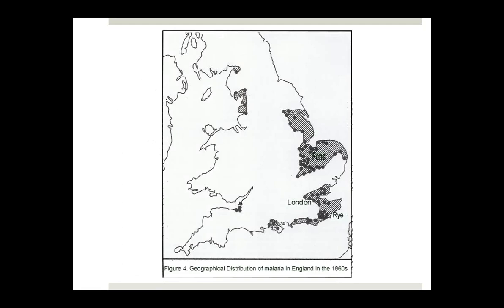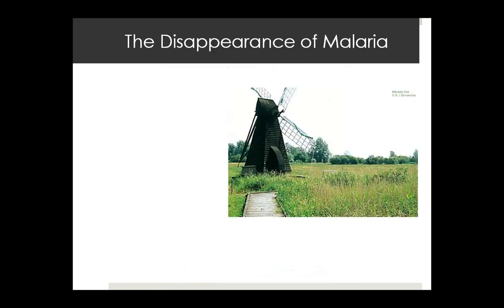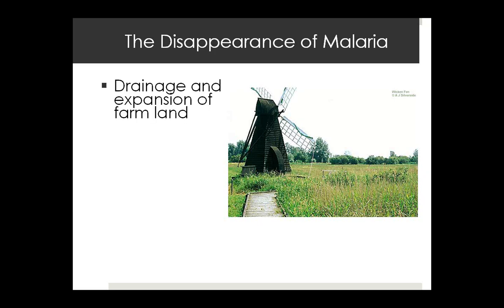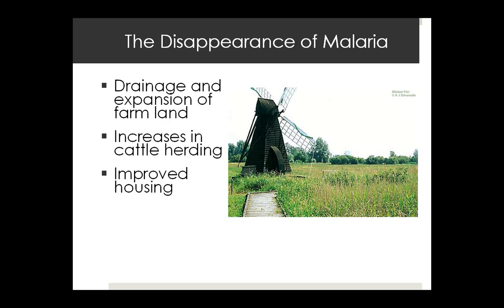In England in the late 1860s, malaria was seen in the darker areas on the map. During the 17th and 18th centuries, the areas around the Fens in the southeast of England were drained. Early drainage tended to make the problem worse, but with the development of windmills and hydraulic pumps, drainage occurred, farmland opened up, cattle herds increased, housing improved, and eventually England grew out of malaria.